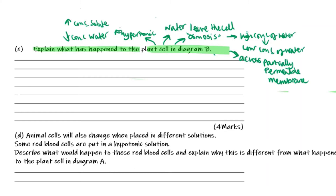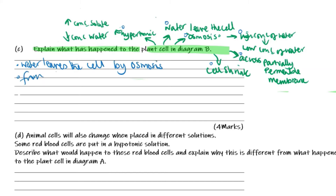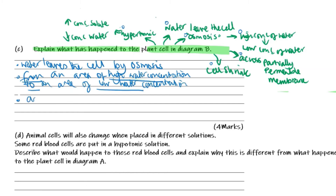This happens across a partially permeable membrane, and when it does this the cell will shrink. Now let's put all these key points into sentences to gain the four marks. By osmosis, water goes from a region of high water concentration to an area of low water concentration, across a partially permeable membrane.